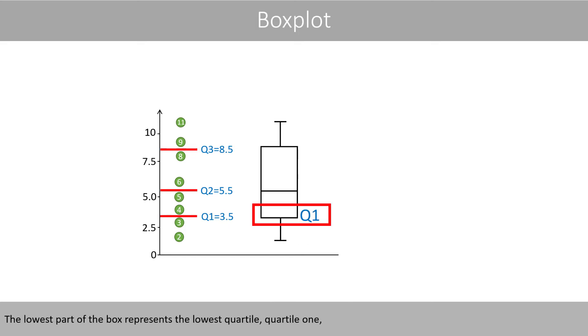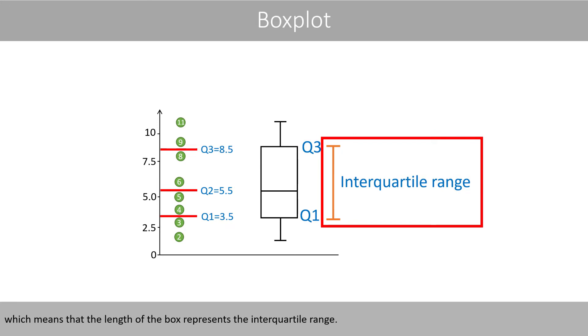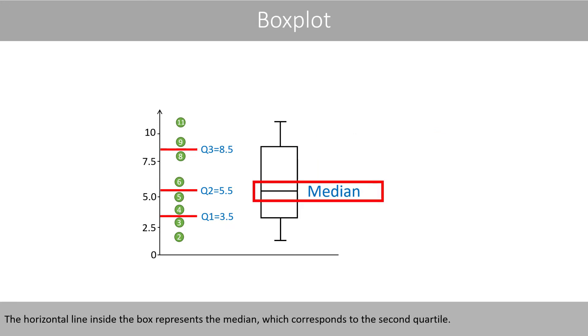The lowest part of the box represents the lowest quartile, quartile 1, whereas the upper part of the box represents quartile 3, which means that the length of the box represents the interquartile range. The horizontal line inside the box represents the median, which corresponds to the second quartile.